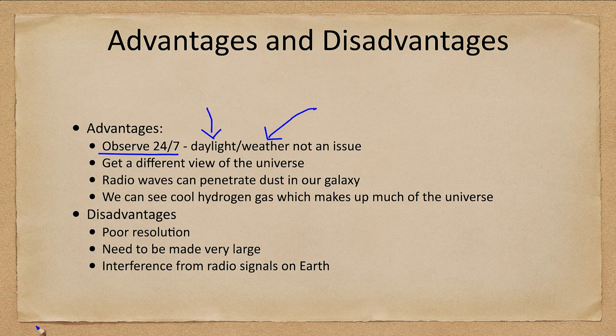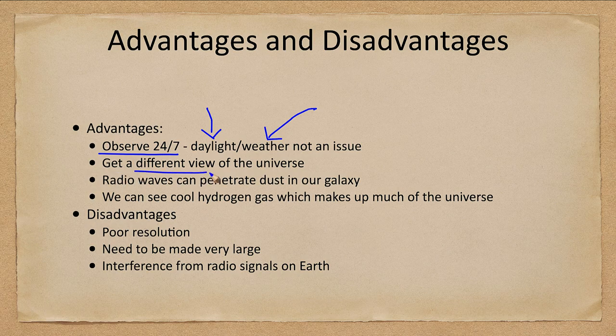Weather is generally not an issue unless you have an incredibly dense blizzard or a thunderstorm — the electrical discharges in a thunderstorm would cause interference in the radio equipment. But overall, light rain, light snow, you can observe right through that. You can observe through clouds and don't need to worry about any of that.